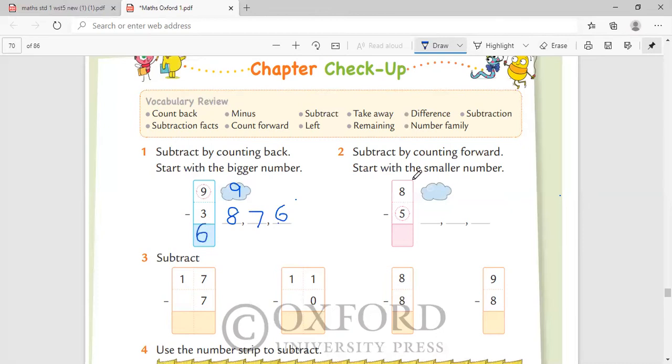We are counting back. Subtract by counting forward. Start with the smaller number. What is the difference? In subtraction, we do it from the bigger number. In addition, we do it from the smaller number. Five, six, seven. Is it so? You have to subtract, right? So it is saying count forward. So though we have written the number five here, you will be writing six, seven, eight. And what is the number here? One, two, three.